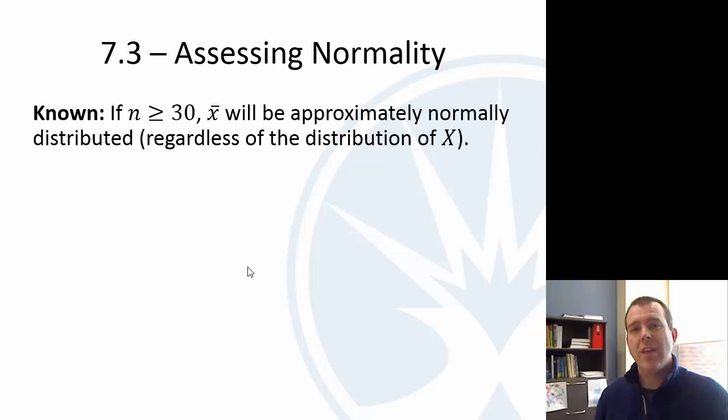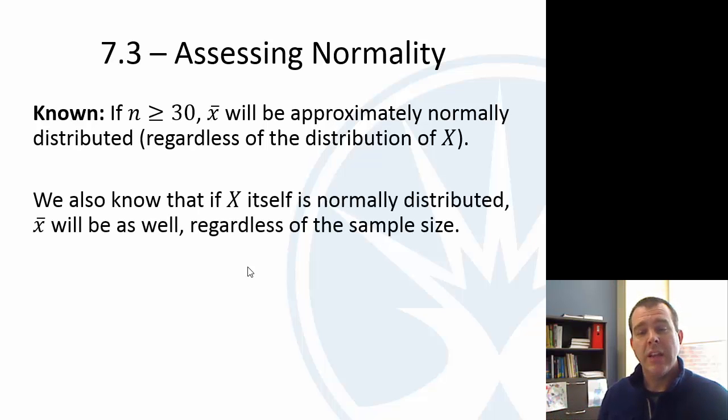We know that if the sample size is at least 30, the sample mean will be approximately normally distributed. Interestingly, if the variable x is itself normally distributed, the sample mean will also be normally distributed, even if it's a sample size of 6. So here we have sample means we know are normally distributed under these two conditions.